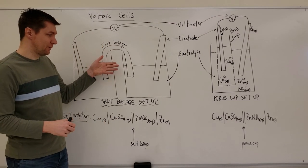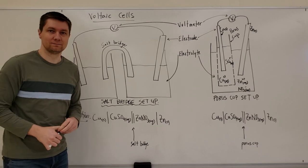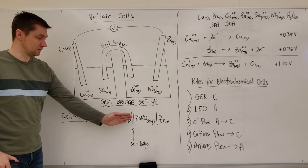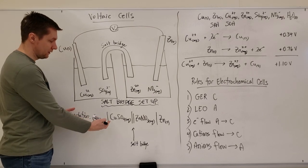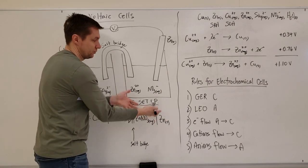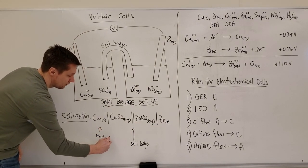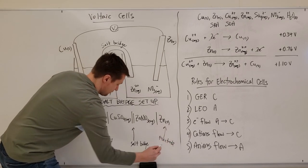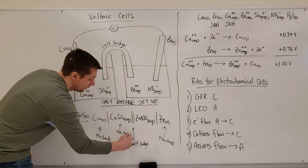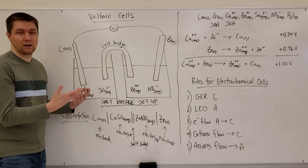We're going to look at this example in more detail with everything labeled in the diagram. You can see the different substances from the cell notation placed into the diagram. Everything on one side of the salt bridge goes in one beaker, and everything on the other side goes in the other beaker. The two things on the ends are the electrodes, and the two things in the middle are the electrolytes.